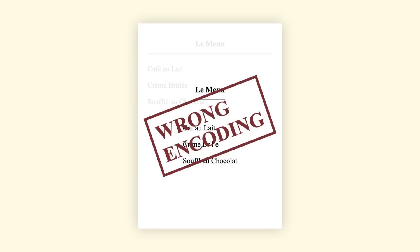When you see garbled characters, it means someone tried to read UTF-8 text with the wrong encoding — like trying to read a French menu with an English-only dictionary.